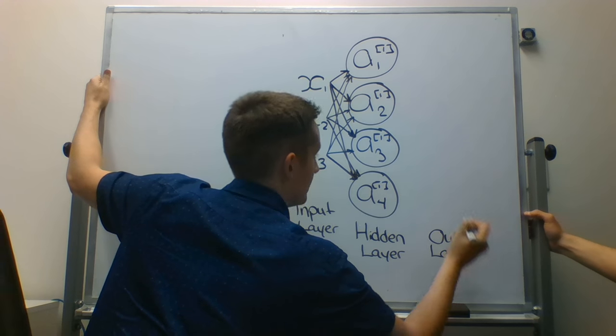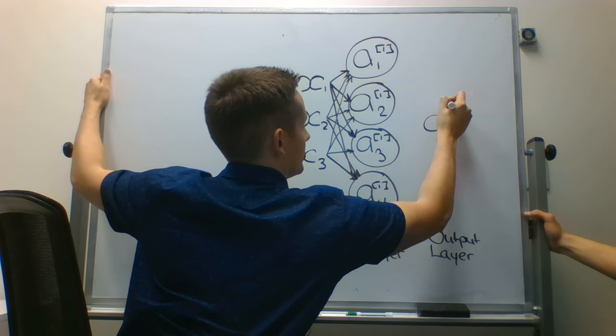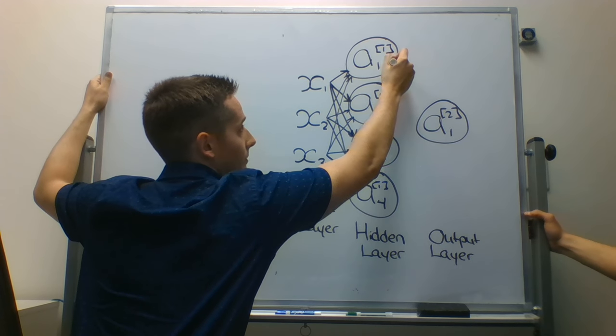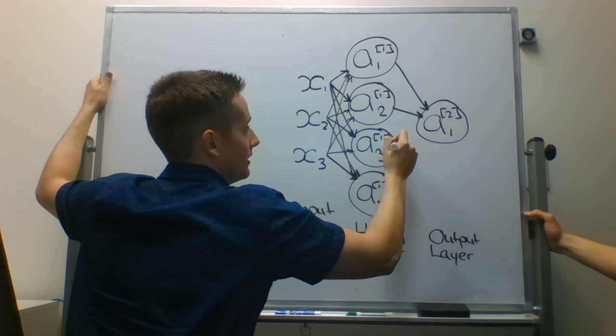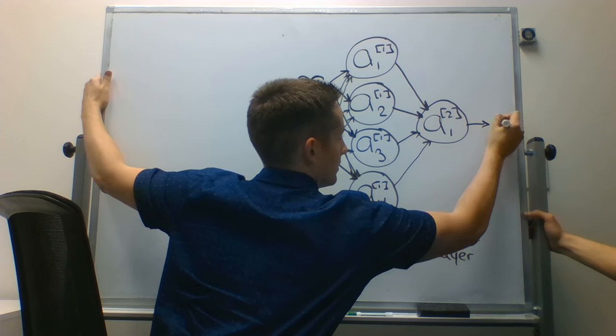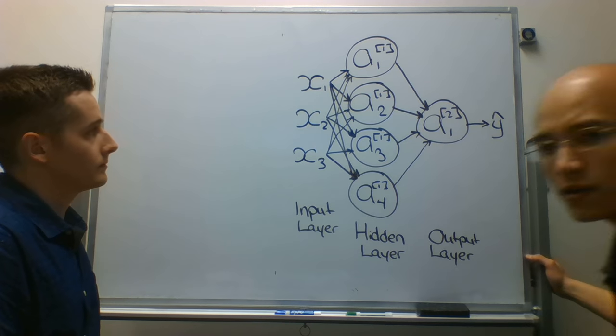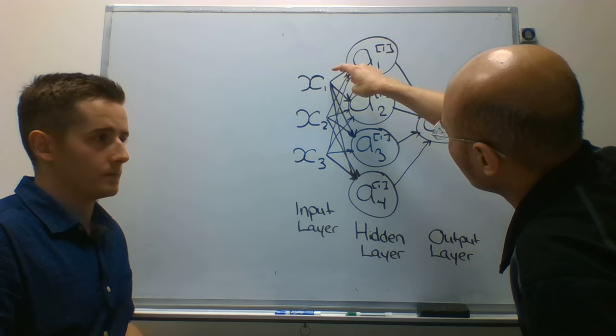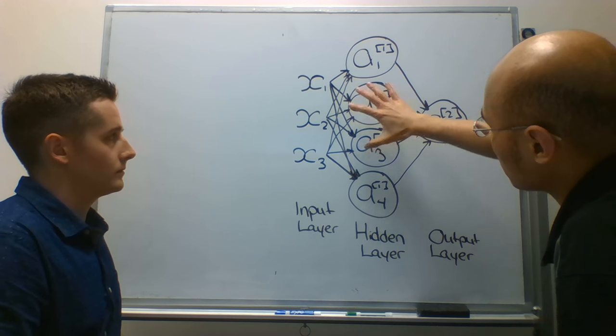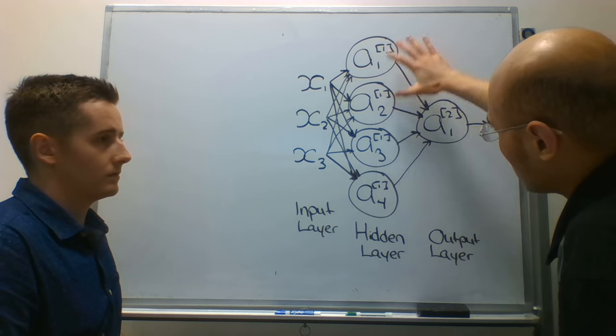And here we'll have an output layer. And this, in this example, we'll do a layer 2, and just one node for the output layer. Each of the preceding layers are going to have an output, just like we said with the signal coming out, if it's high enough. And each of these will connect to this neuron in the next layer. So, it will have four inputs, and then this will produce our y-hat prediction. So, I think it's important to remember that in a neural network, every predictor connects to every neuron in this hidden layer here.